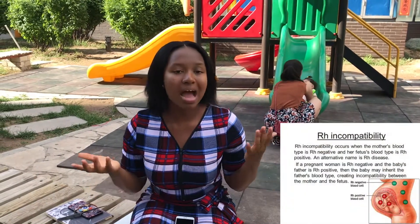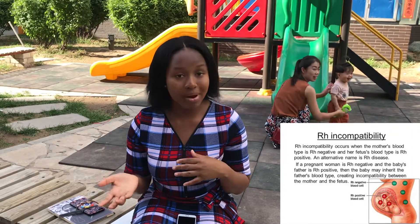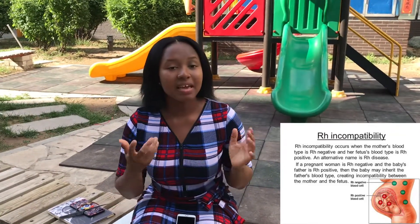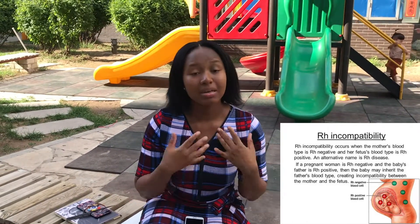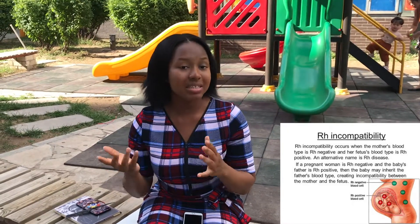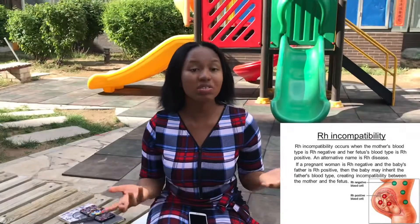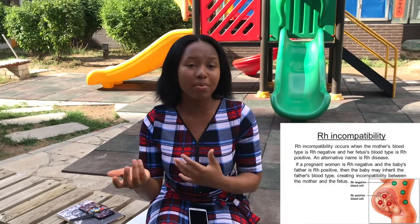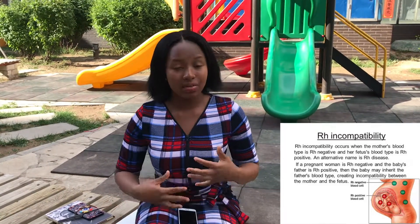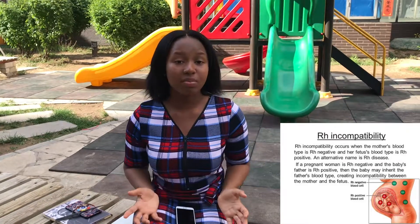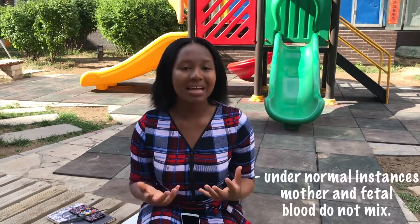Problems might arise with these resource factors during pregnancy. If the mom is resource negative and the child is resource positive — maybe the mom is A negative but the child is A positive — problems will arise. This is called resource incompatibility. These resource factors are usually passed down from our parents to us, and in pregnancy, with the mom being negative and the child being positive, problems might arise when the blood happens to mix.